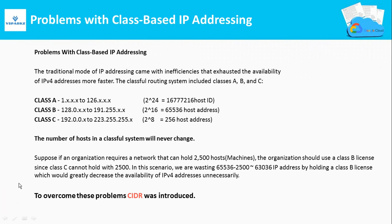What we saw in the traditional mode of IP addressing came with some inefficiencies that exhausted the availability of IPv4 addresses much faster. That type of addressing is called the classful routing system. In the classful system — Class A, B, and C — Class A can hold 2 to the power of 24 hosts, Class B 2 to the power of 16, and Class C 2 to the power of 8. This classful system is fixed: if you buy a Class A license you get that many hosts; if you buy Class C you get that many IP addresses.